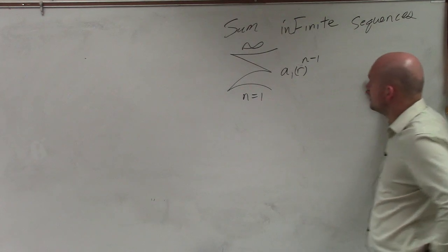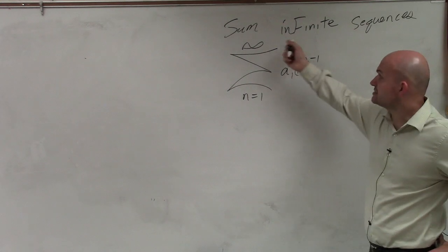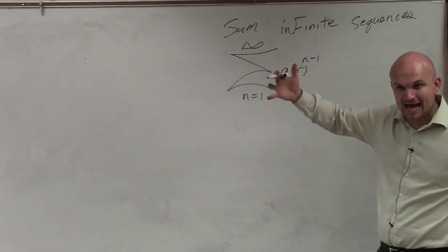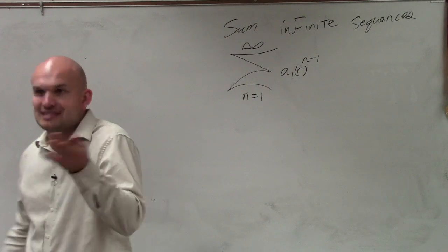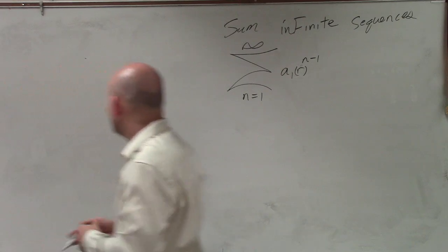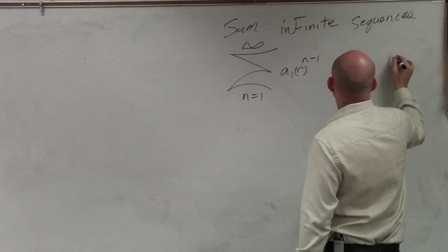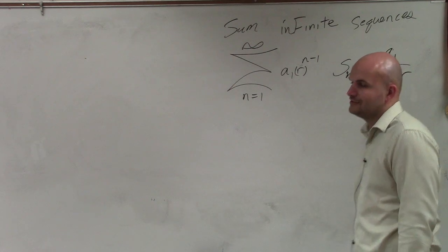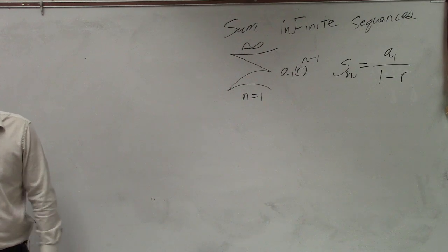If you look at this in sigma notation, it's exactly the same as a finite series. The only difference is the value we stop at is infinity, meaning we're never going to stop — we're always going to be adding. So there is a sum formula, and the sum for an infinite series is much easier than for a finite series. It's just a sub 1 divided by 1 minus r.